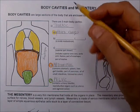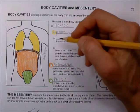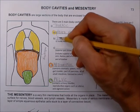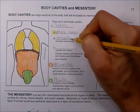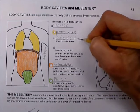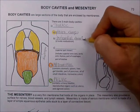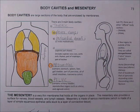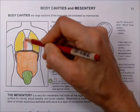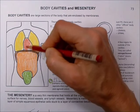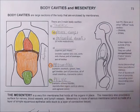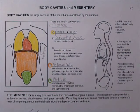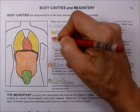Then B, we have the pericardial cavity — pericardial — and of course this is around the heart. I'm going to make that red, let's go with the heart in it. It doesn't matter what colors you use, as long as you circle it.